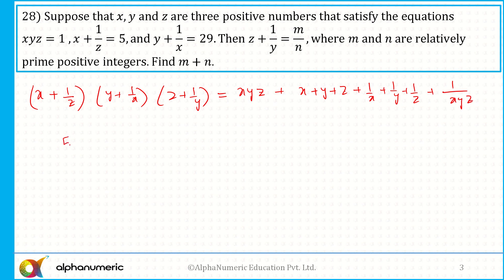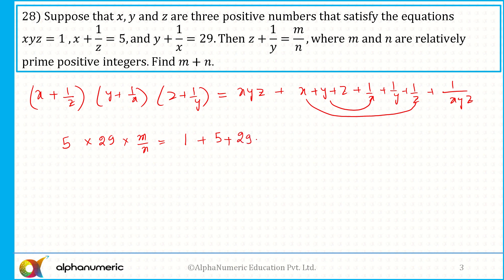So x plus 1 by z equals 5, y plus 1 by x equals 29, and the last pair z plus 1 by y equals m by n. Plus 1 upon xyz, which is 1 by 1. Now I need to simply simplify. So the value of 5 into 29 into m by n equals xyz plus 1/(xyz) plus x plus 1 by z plus y plus 1 by x plus z plus 1 by y.